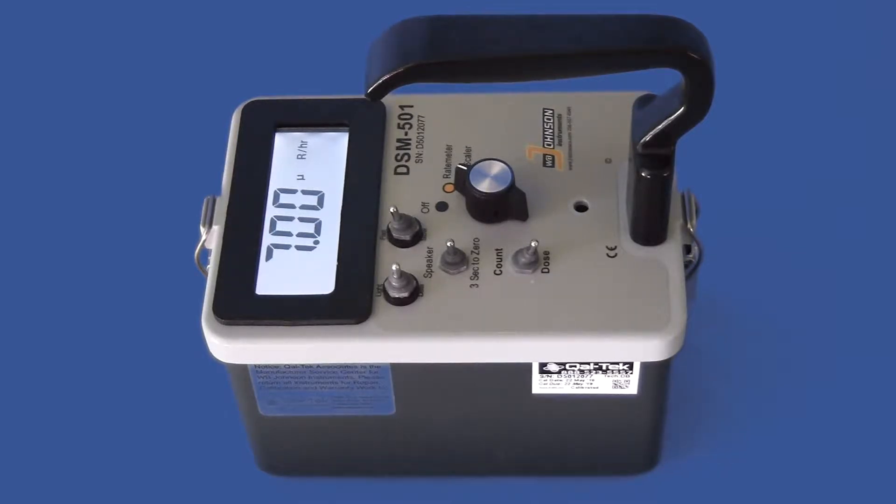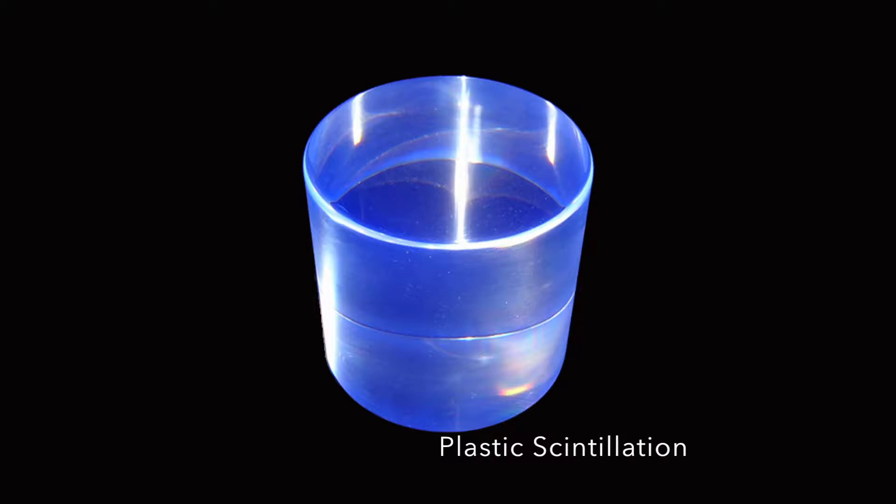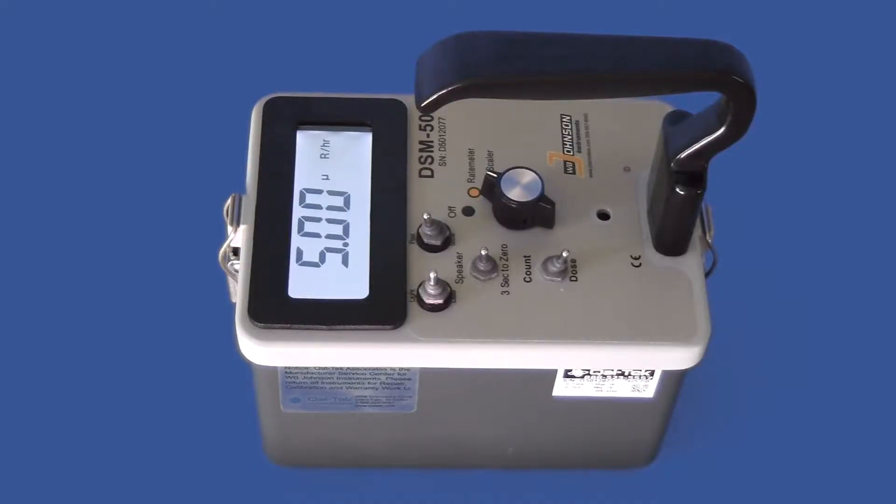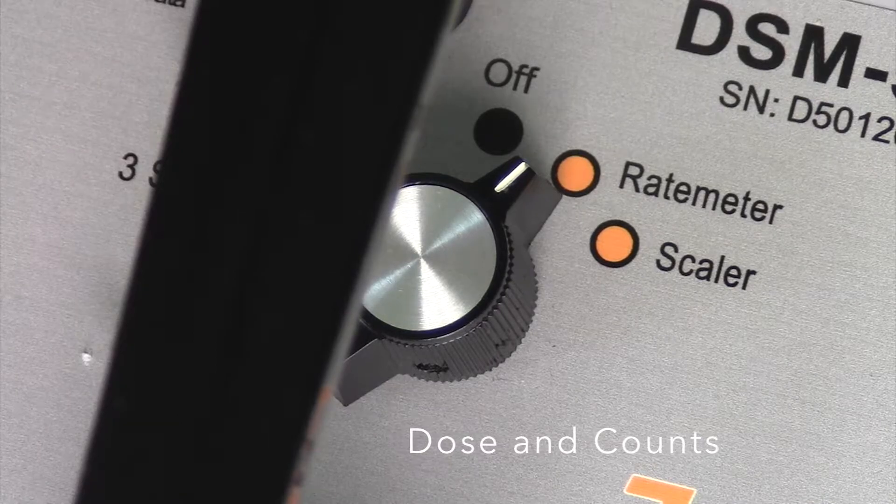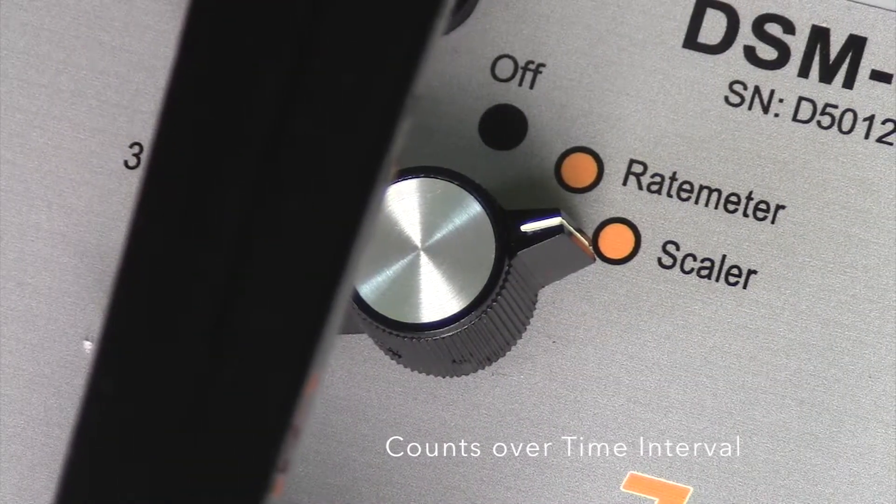This microroentgen meter features plastic scintillation which is ideal for dose measurement because it is near tissue equivalent. The DSM-501 features rate meter mode which measures in dose and counts, and scalar mode measuring counts over a set time interval.